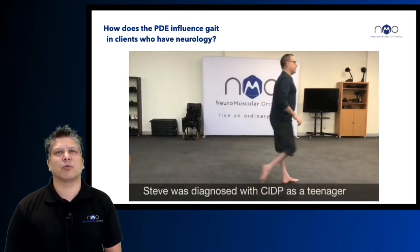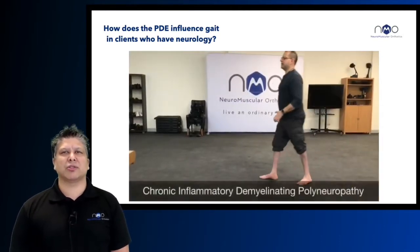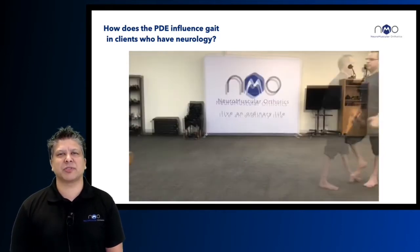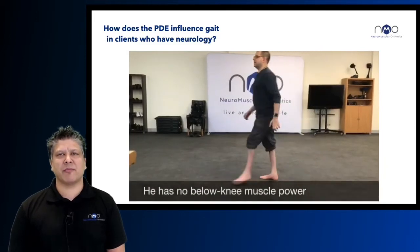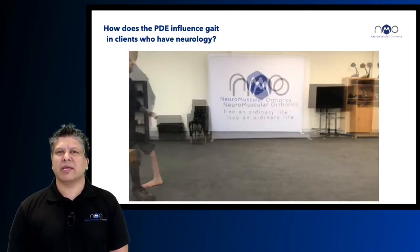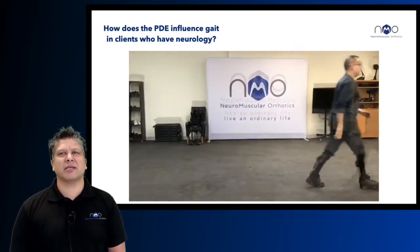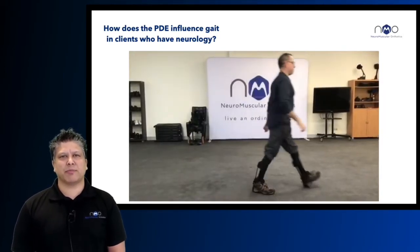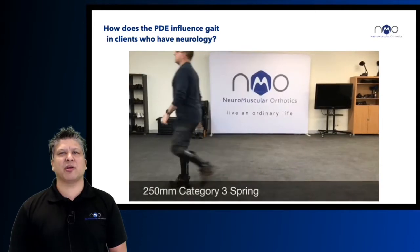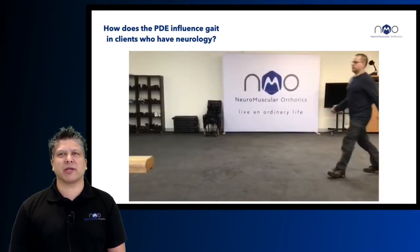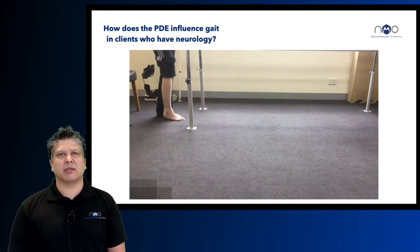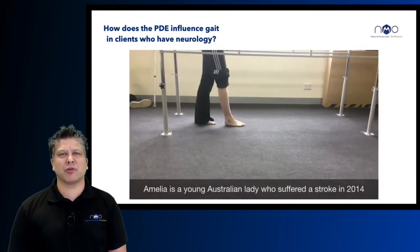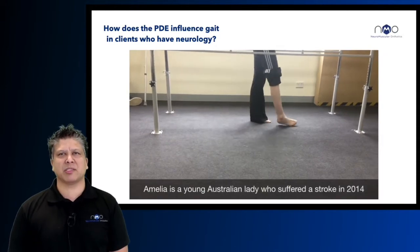Steve is a gentleman in his early 50s who has chronic demyelinating inflammatory neuropathy. He has no muscle power below the knee and was fitted with bilateral PDEs. His preferred spring was a 250 millimeter category three, which allowed him enough ankle plantar flexion in loading response while at the same time controlling the rate of dorsiflexion to supplement his weak calf.